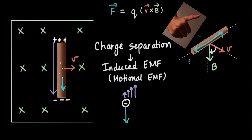We can actually derive the magnitude BVL. To do that, let's balance these forces and figure out the electric field strength. The force on the electron due to the electric field — charge times electric field strength — equals the Lorentz force, which is e into V into B. Working this out gives the magnitude of electric field strength as E = VB.